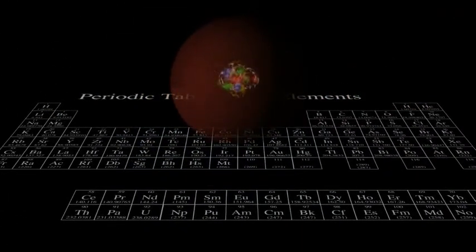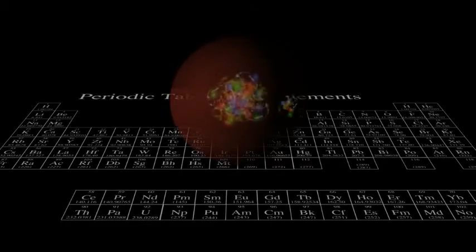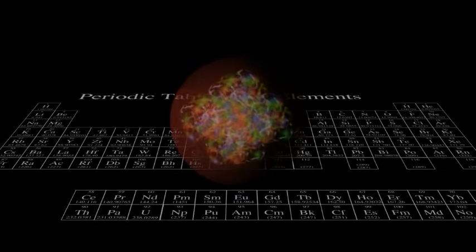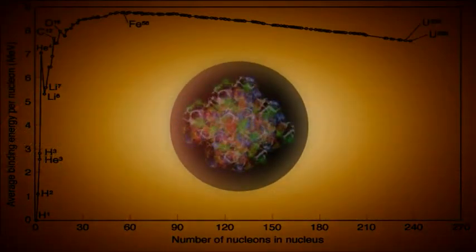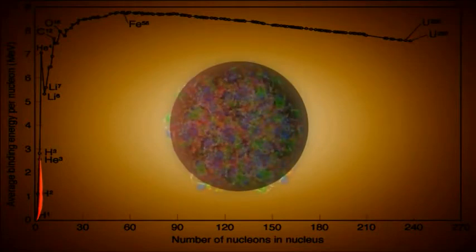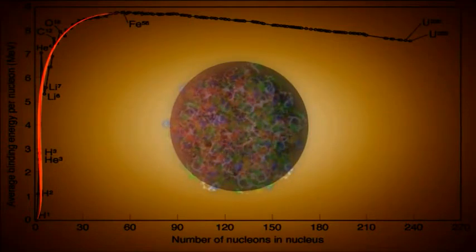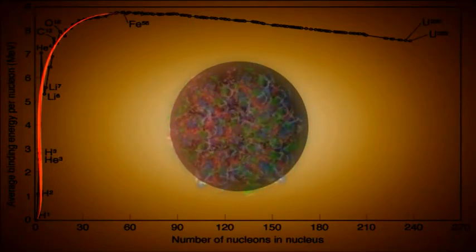As we add nucleons and work our way up the chart of the periodic table, initially each nucleus is generally a little more tightly bound than the one before. This chart gives the actual numbers. This increase in binding energy continues until we get to iron and nickel, where the nucleus has about 60 nucleons in it.